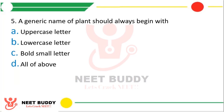Question 15. A generic name of a plant should always begin with: Option A, Upper case; Option B, Lower case; Option C, Bold small letter; or Option D, All of the above. The correct answer is Option A, upper case letter.